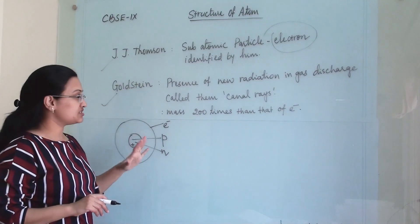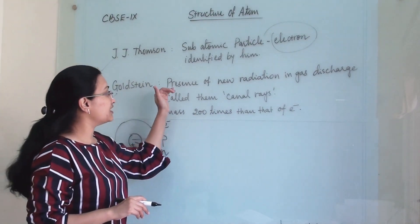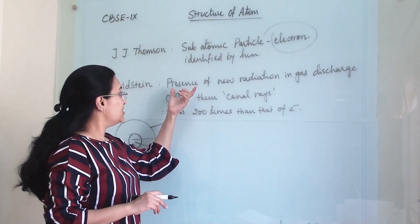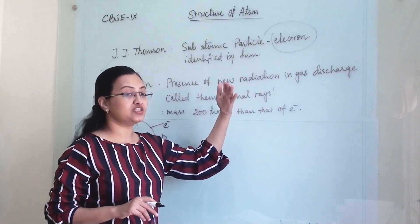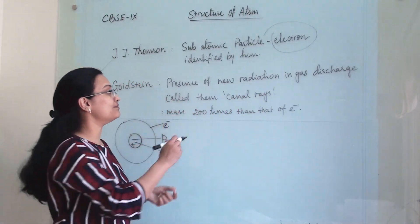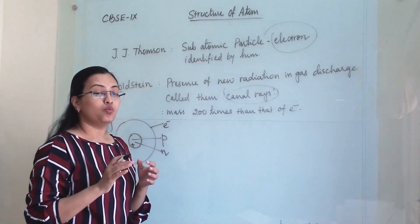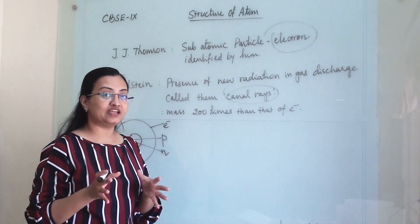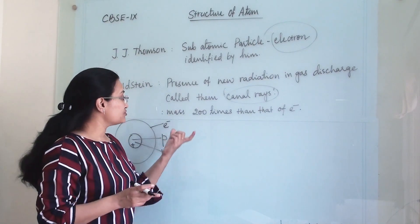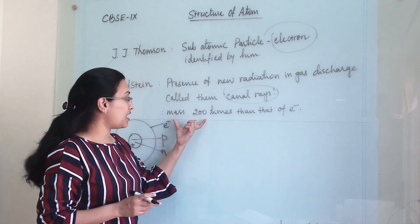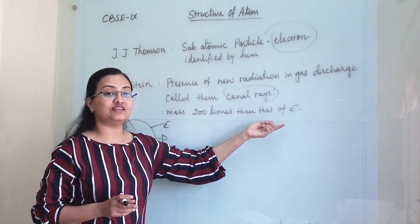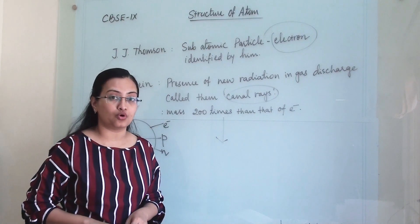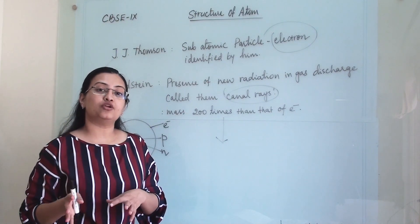The second scientist was Goldstein, who found the presence of another particle in the atom. He discovered new radiation in a gas discharge and called them canal rays. These rays were positively charged, got deflected by a negative environment, and had a mass two times greater than that of the electron. This eventually led to the discovery of the proton as a subatomic particle.